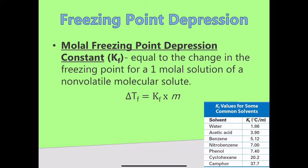We can do the same thing for freezing point. The constants are going to change, so the Kf values are different from the Kb values, but the formula pretty much stays the same. We've got the change in freezing temperature, Kf, and molality again — giving us the molal freezing point depression constant.